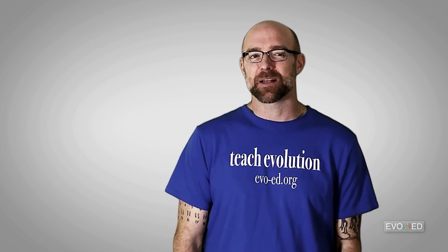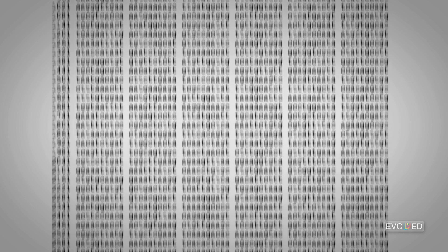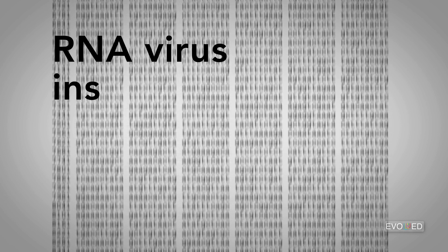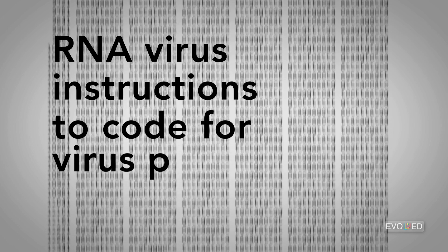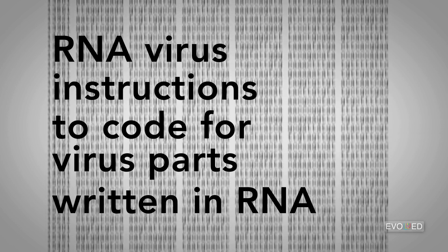Well, to answer that, let's take a look at the coronavirus itself. The coronavirus has a genome of about 30,000 nucleotides. It's an RNA virus, which just means that the instructions that it carries to code for all of its virus parts, those instructions are made with RNA instead of DNA. This is not at all uncommon for viruses.